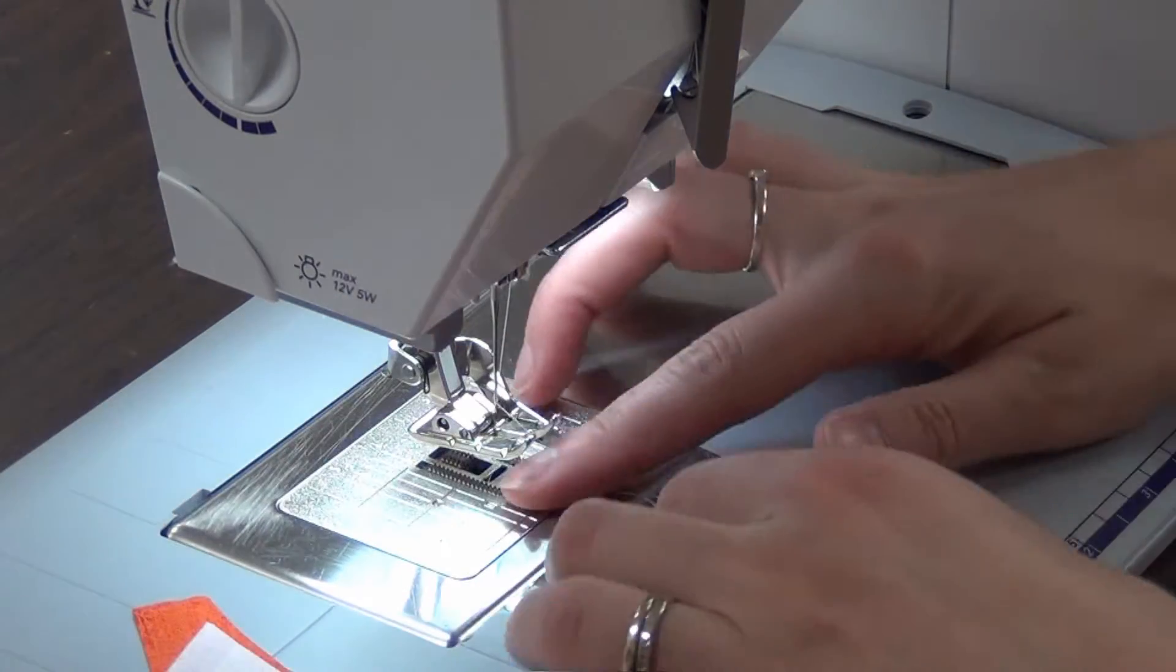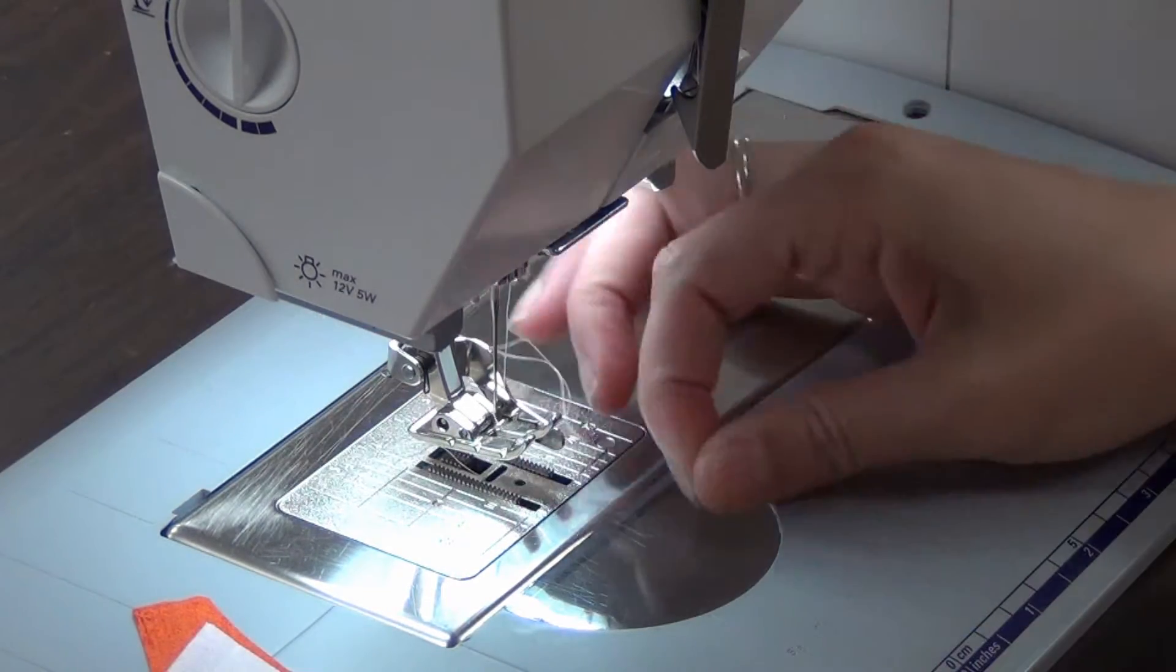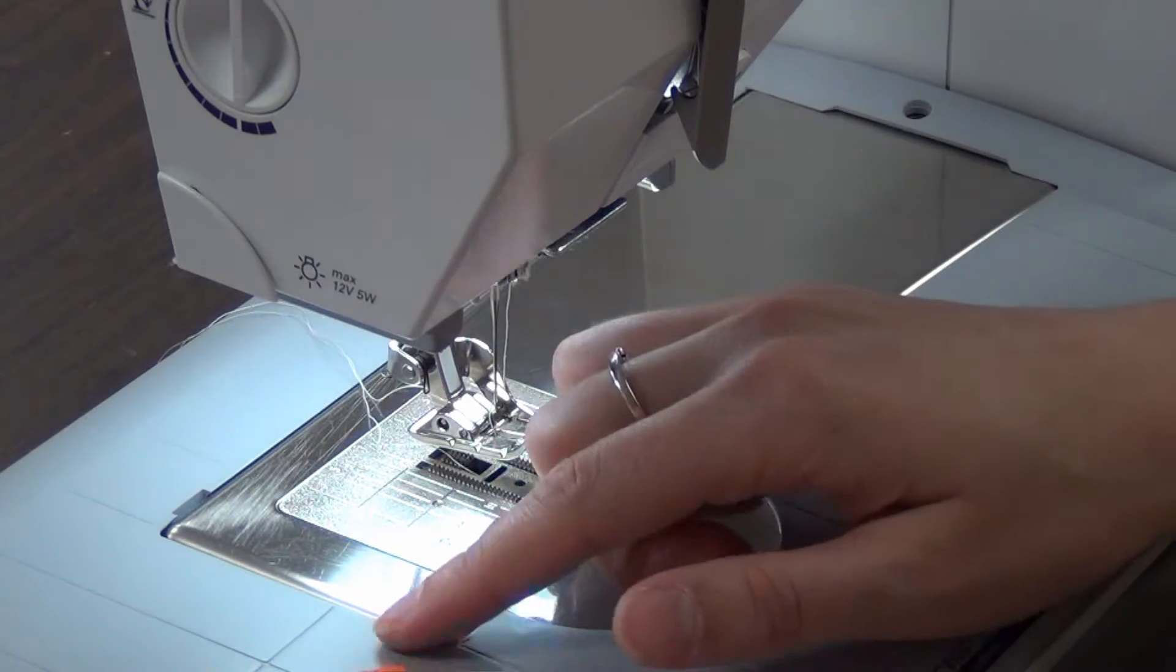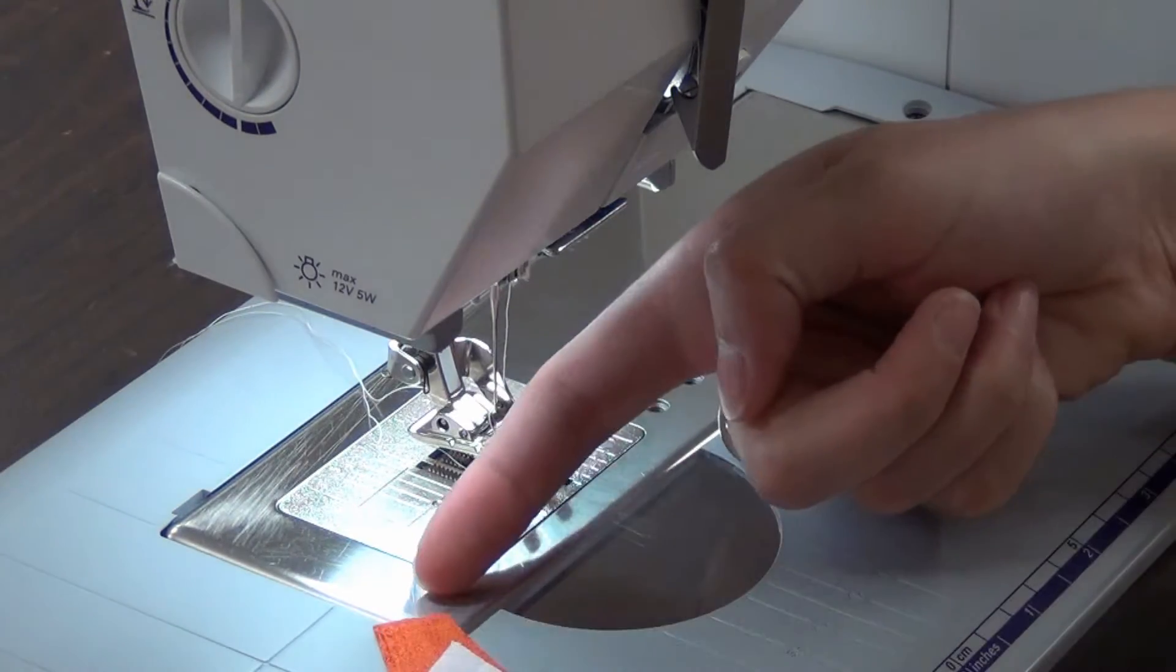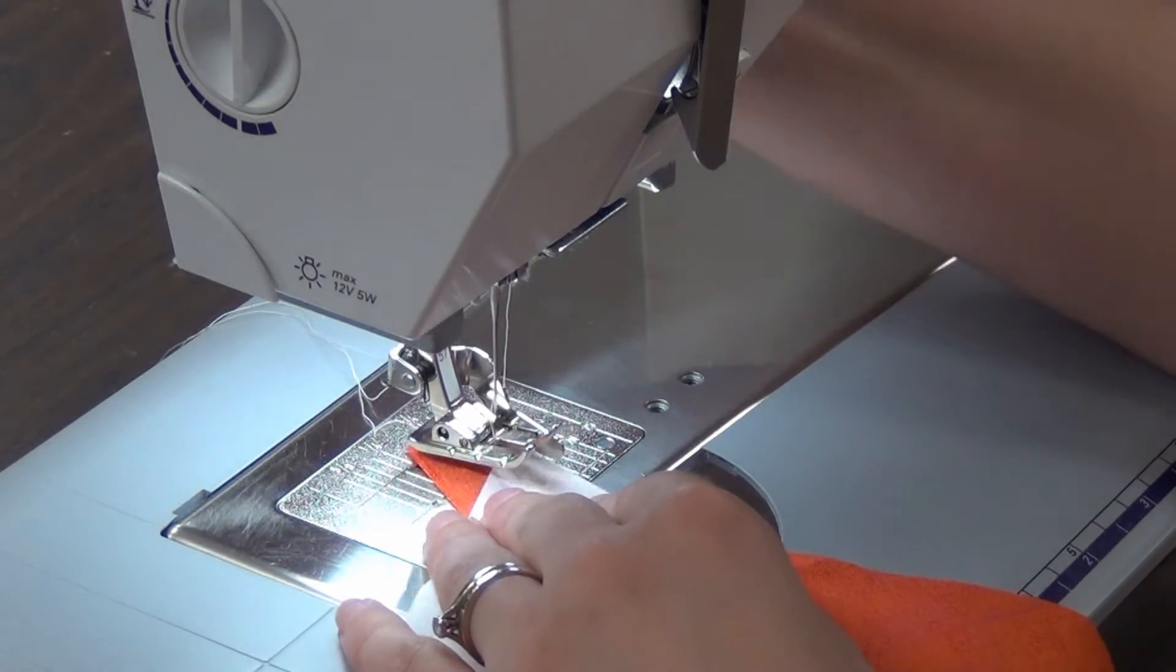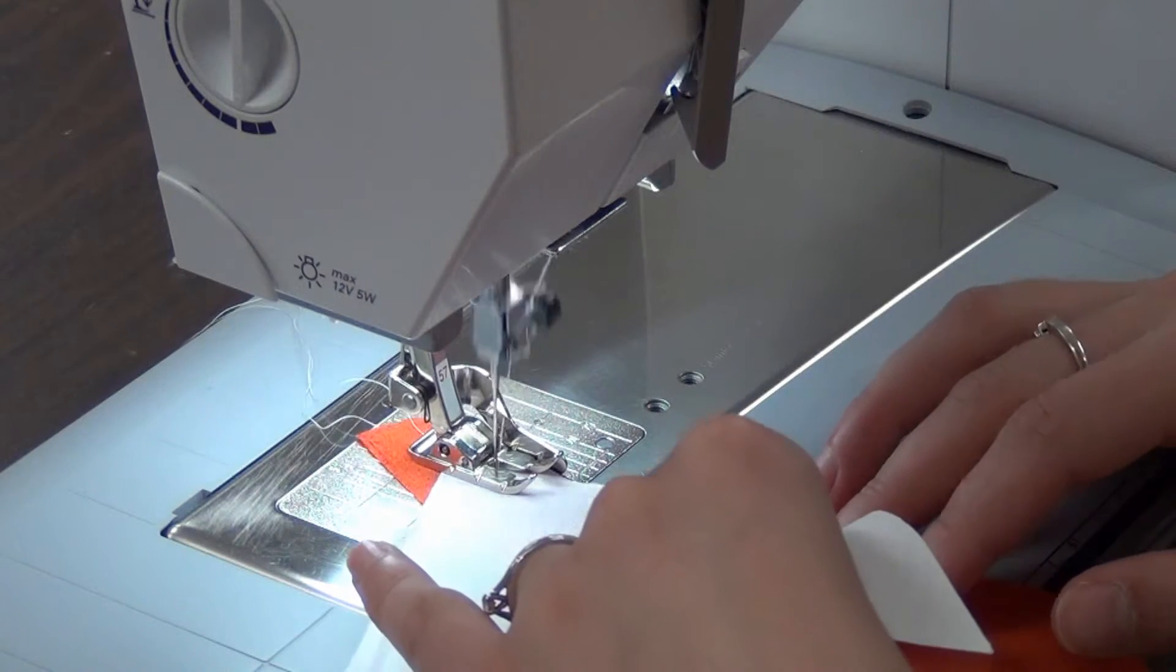Now I'm using a quarter inch seam and when I sew these half square triangles it's going to be the same for each color. I want to have about a half inch from the very edge to where my point lines up on the block. I'm going to start stitching, keeping those angles separated.